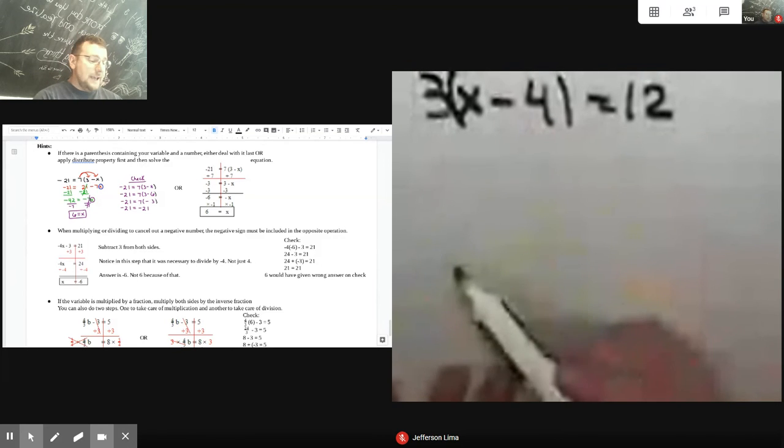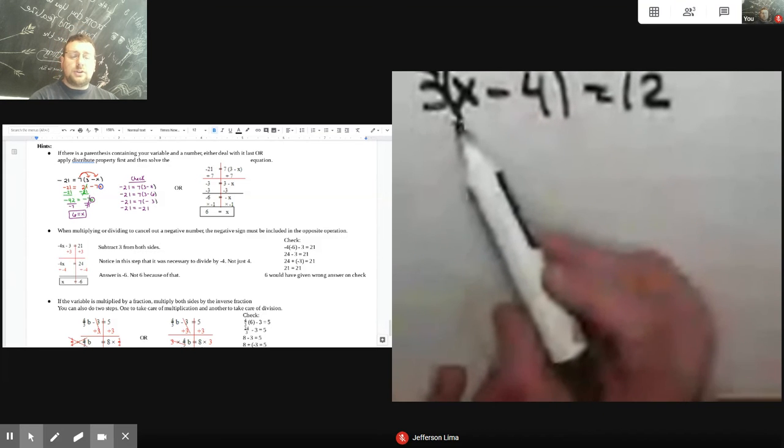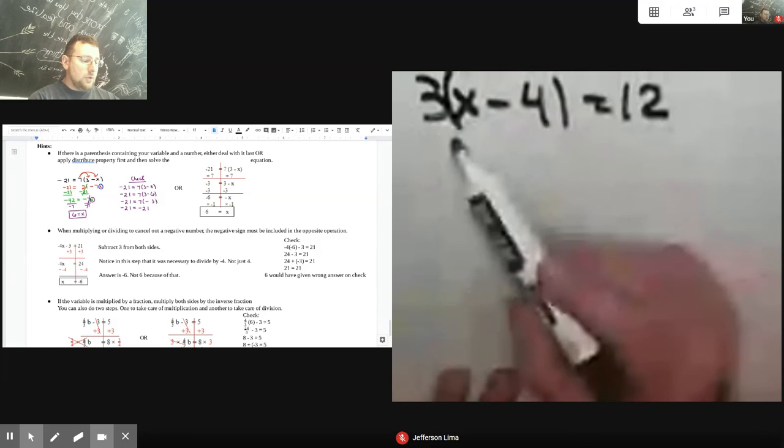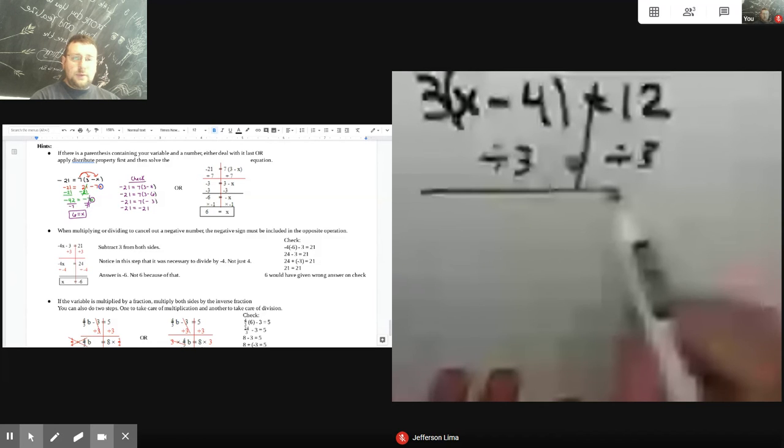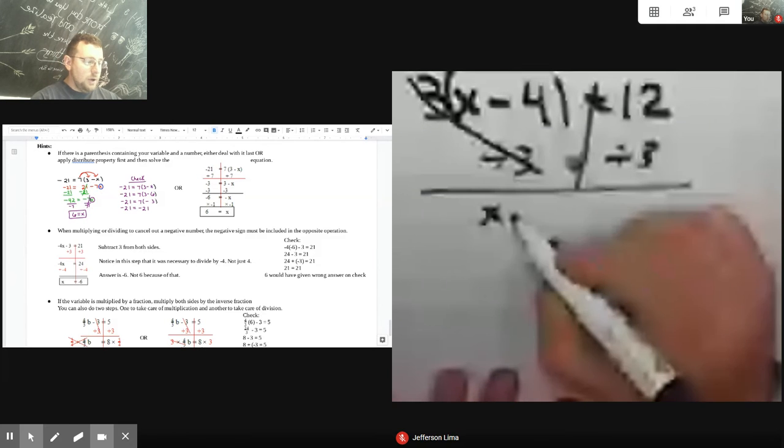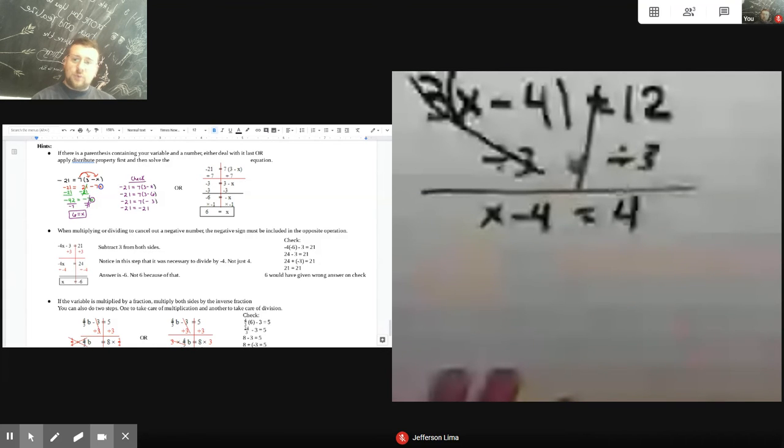And so if I'm doing that, my next thing to do, since there's nothing to add or subtract outside of parentheses, is to actually try to get rid of the three. And the three is multiplying here. And so I have to divide both sides by three in order to get rid of it. So if I'm dividing both sides by three, three divided by three is going to be one. So the three's cancel out. And you have x minus four equals 12 divided by three, which is four.